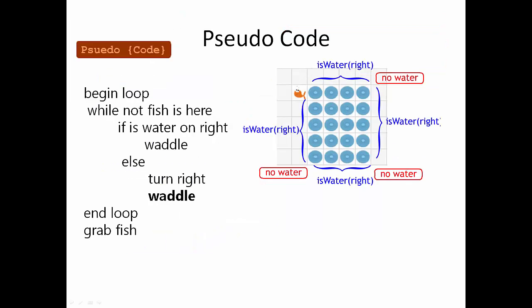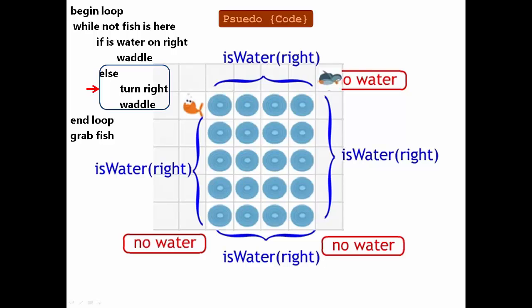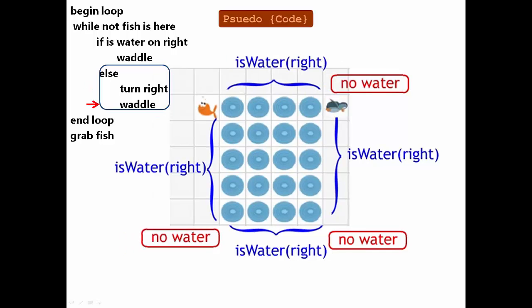Well, a simple addition of waddle in the else section of the if statement will resolve this. Check it out now. Now Pam waddles after turning right as part of the else, and can continue along the perimeter until she finally gets that fish.